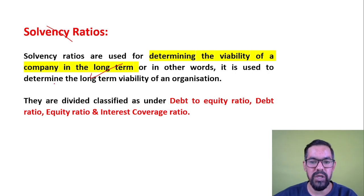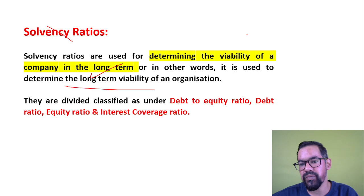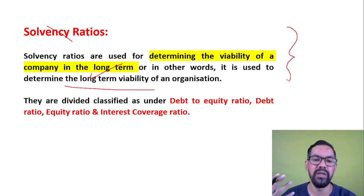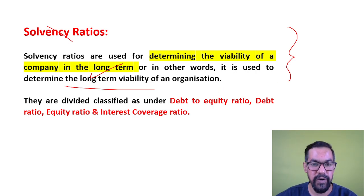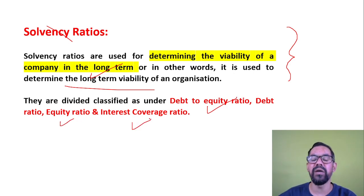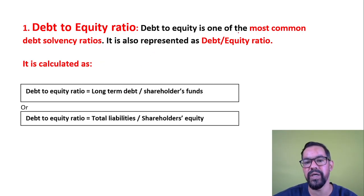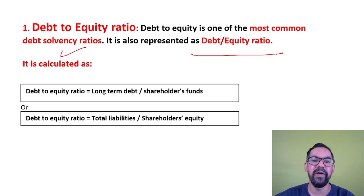Solvency ratios are used for determining the viability of an organization in the long term. In other words, it is used to determine the long-term viability of an organization. Basically we are studying the long-term debt versus the capital or the shareholders' equity in an organization. We have a number of ratios here: debt-to-equity ratio, debt ratio, equity ratio, and interest coverage ratio. We will start with debt-to-equity ratio — total debt divided by shareholders' equity.